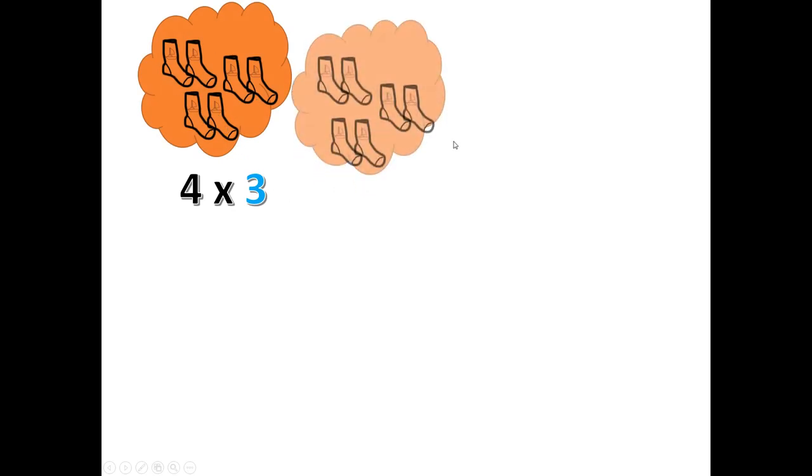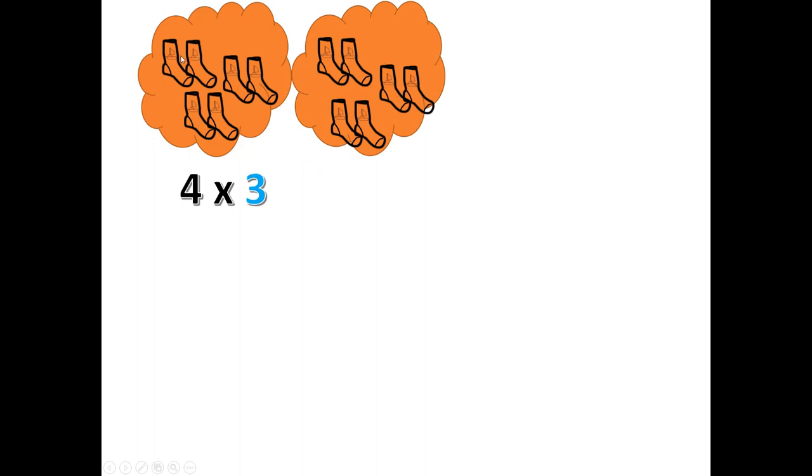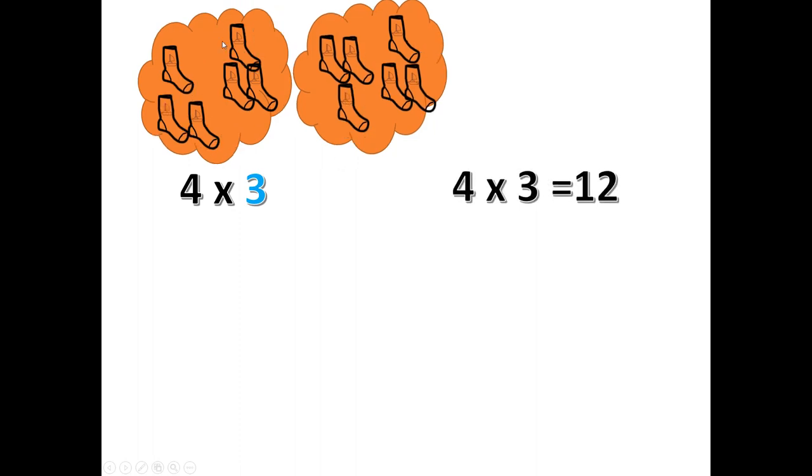Let's keep going. 4 times 3. I can double 3 to get 6 and then double 6 to get 12. When you see multiply by 4, double-double. It's still 4 groups of 3. If I arrange them a little differently, that's thinking mathematically.